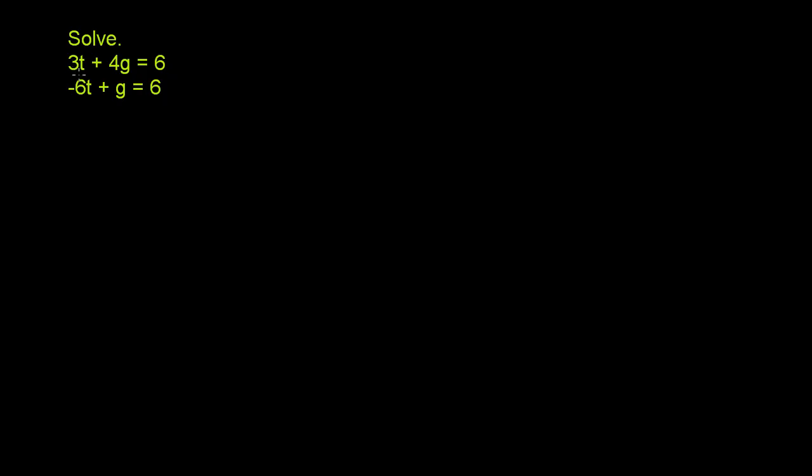And when I say cancelable, if I add 3t to negative 6t, you won't be able to cancel them out. The t won't disappear. But if I were to scale the 3 up, if I were to multiply it by 2 and it becomes 6t, and then I were to add these two things, then they would cancel out. And I would be left just with g's. So let's try to do that.